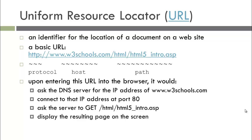When the URL is entered into the web browser, the first thing that happens is a request goes to the DNS server to find the address of the site, such as w3schools. Then it connects on port 80 because that is what HTTP uses. The particular server then receives a request to get the document, the web server returns it, and it is displayed.